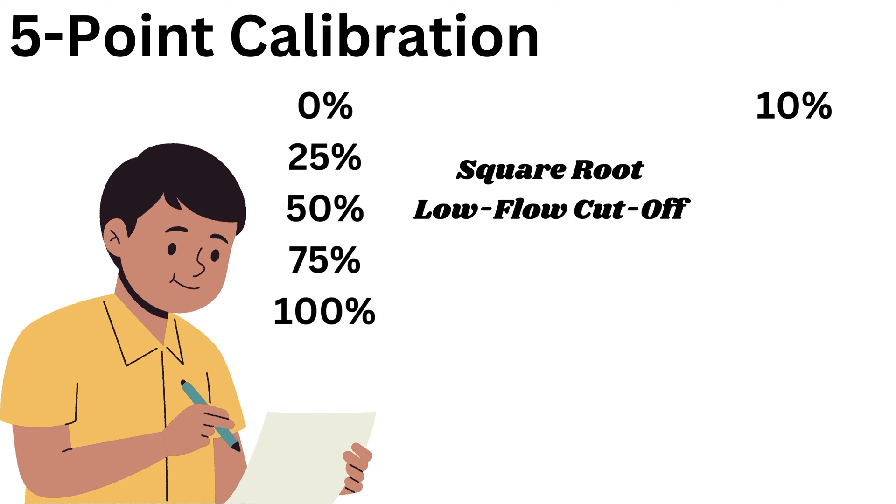So the test points should be 10, 25, 50, 75, and 100% of the flow rate.